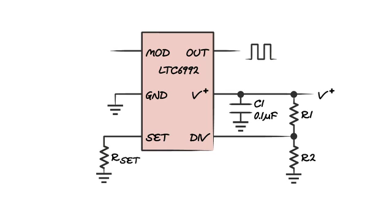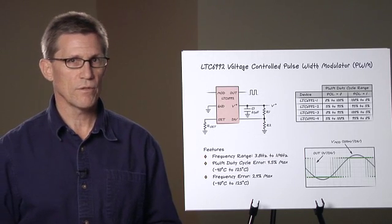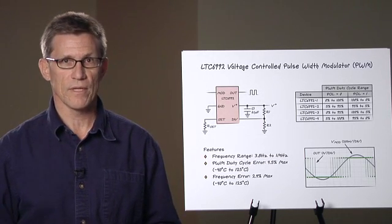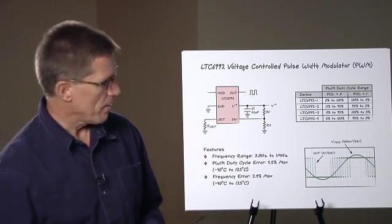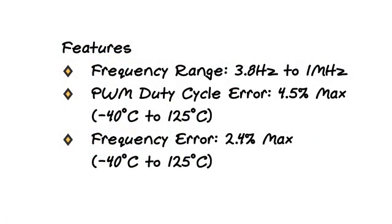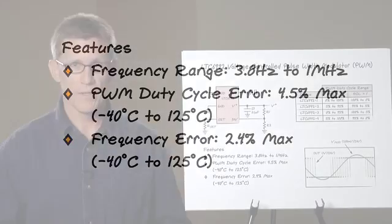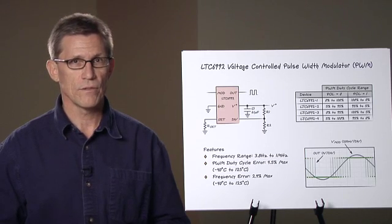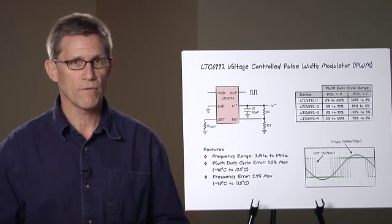A control voltage on this pin, call it Vmod, ranging from 0 to 1 volt sets the output duty cycle directly. The part operates from 3.8 hertz to 1 megahertz with a pulse width duty cycle accuracy of 4.5% maximum and a frequency error of 2.4% maximum.